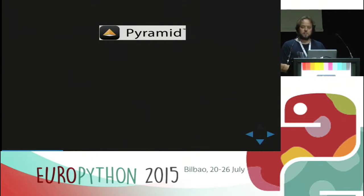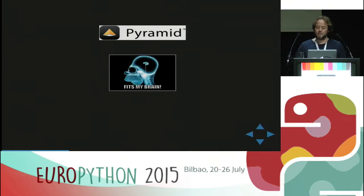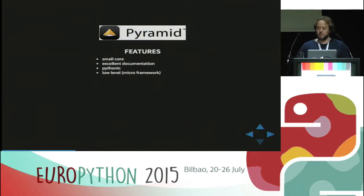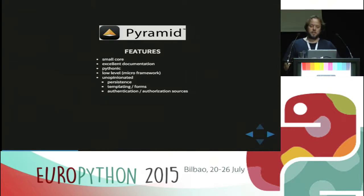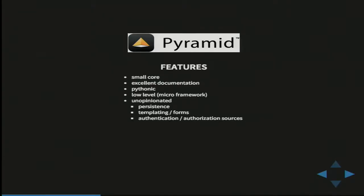The probably greatest thing about Pyramid is it even fits my brain. It has a small core, excellent documentation, it is Pythonic and rather low-level, which is why you can also sort it into the group of micro-frameworks. And it's also unopinionated, which means it makes no assumptions about stuff like persistence and forms, and only basic assumptions about authentication and authorization — which you could call the least common denominator for all kinds of web applications.